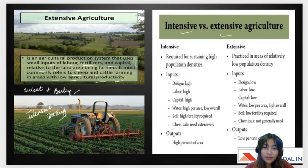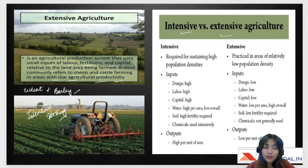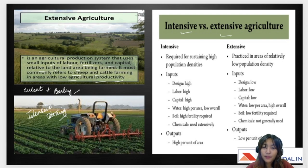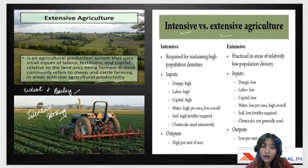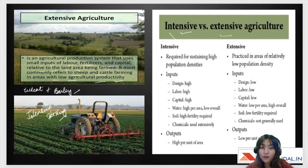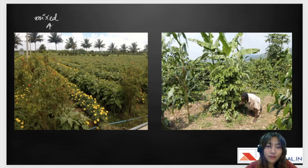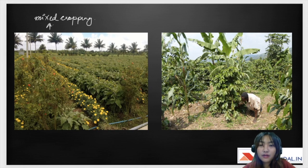Comparing intensive and extensive farming: intensive farming requires high population densities, with high inputs of labor, capital, and water per acre, high soil fertility, and extensive use of chemicals. Extensive farming is practiced in areas of low population density, with low labor, capital, and water inputs per acre but high overall land use, low fertility requirement, and chemicals are not generally used. Output is high per unit area for intensive but low per unit area for extensive.